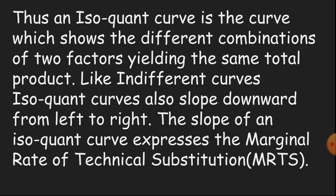The slope of an isoquant curve expresses the marginal rate of technical substitution, or MRTS. MRTS is the amount by which the quantity of one input has to be reduced when one extra unit of another input is used so that output remains constant.